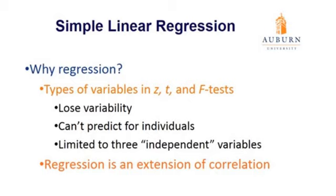Additionally, our F tests are limited to three independent variables. Once we get beyond three independent variables, it's very difficult for us cognitively to understand our analysis. We're three-dimensional beings — we see and understand in three dimensions. So if each independent variable is a dimension, it's very difficult for us to understand more than three.